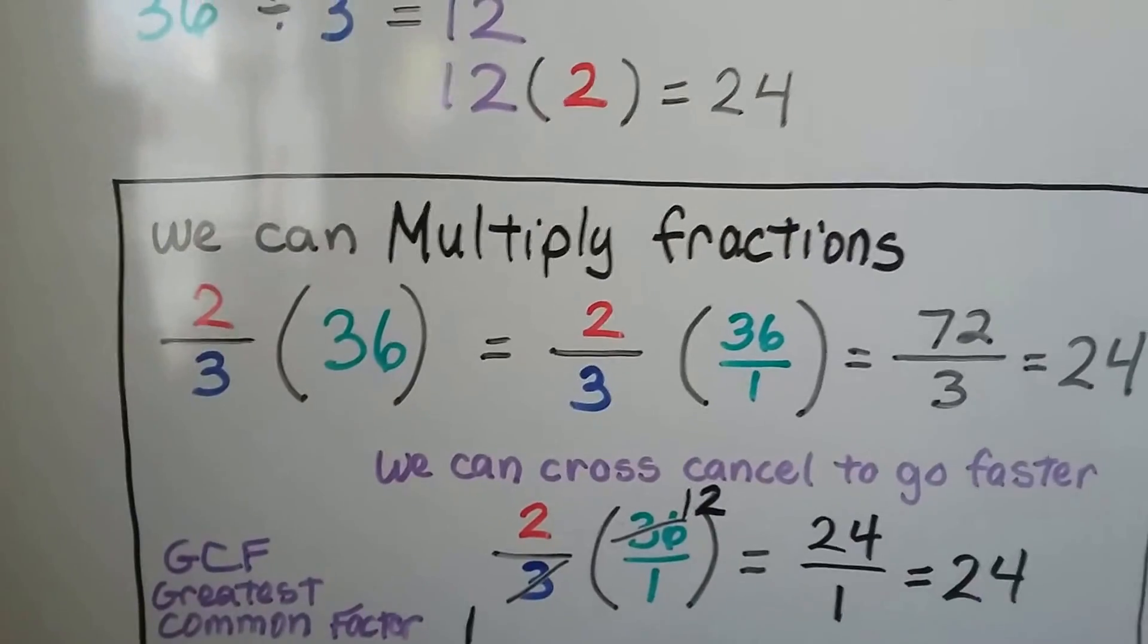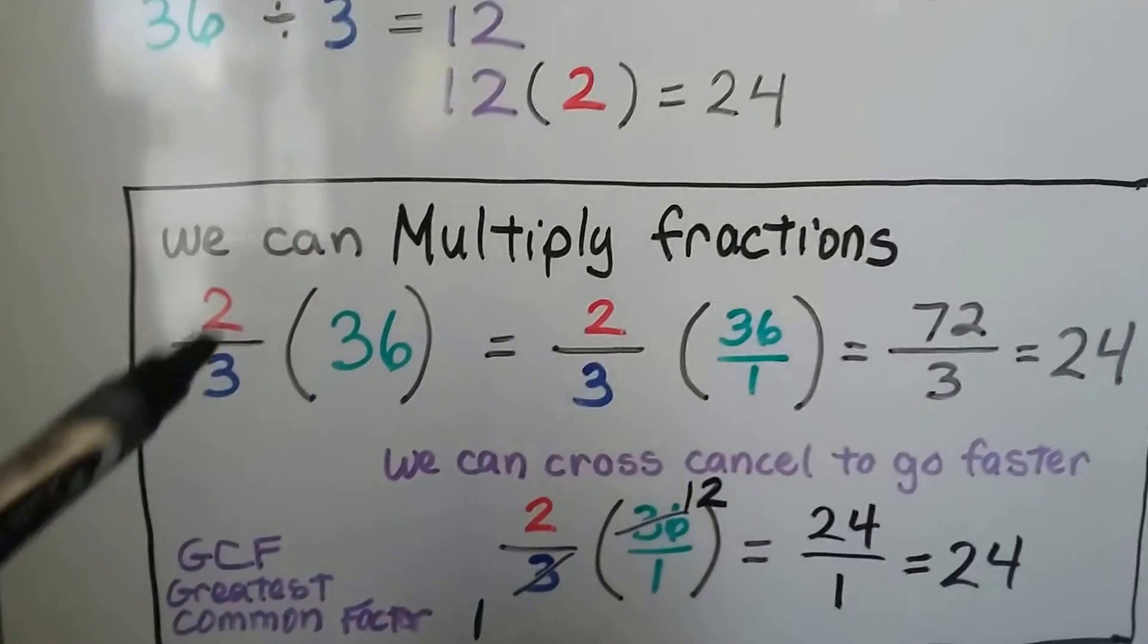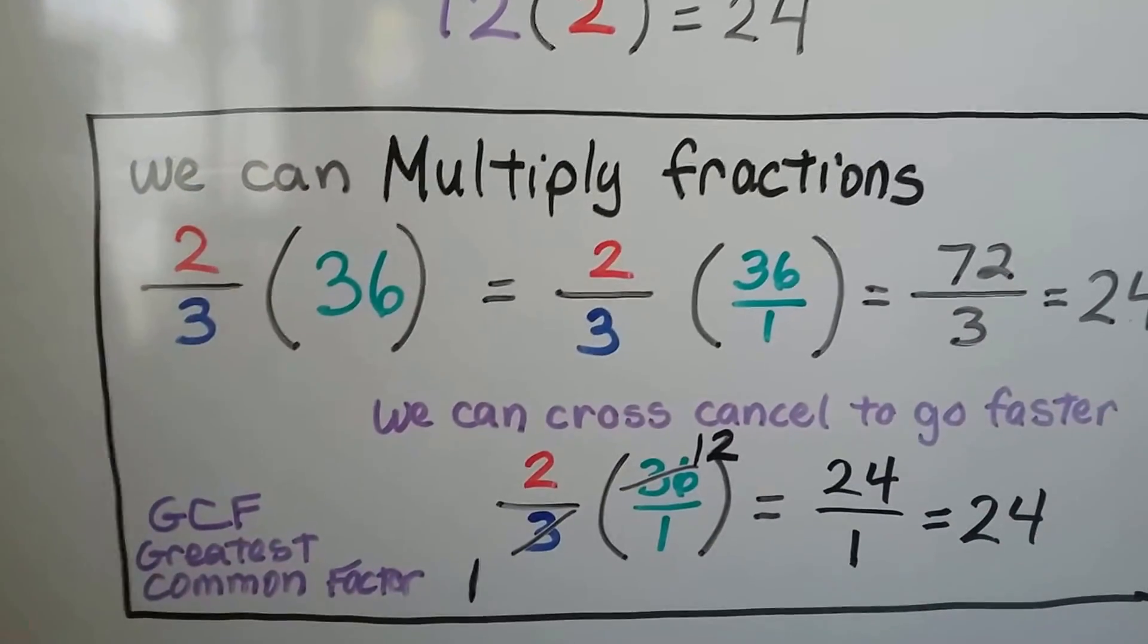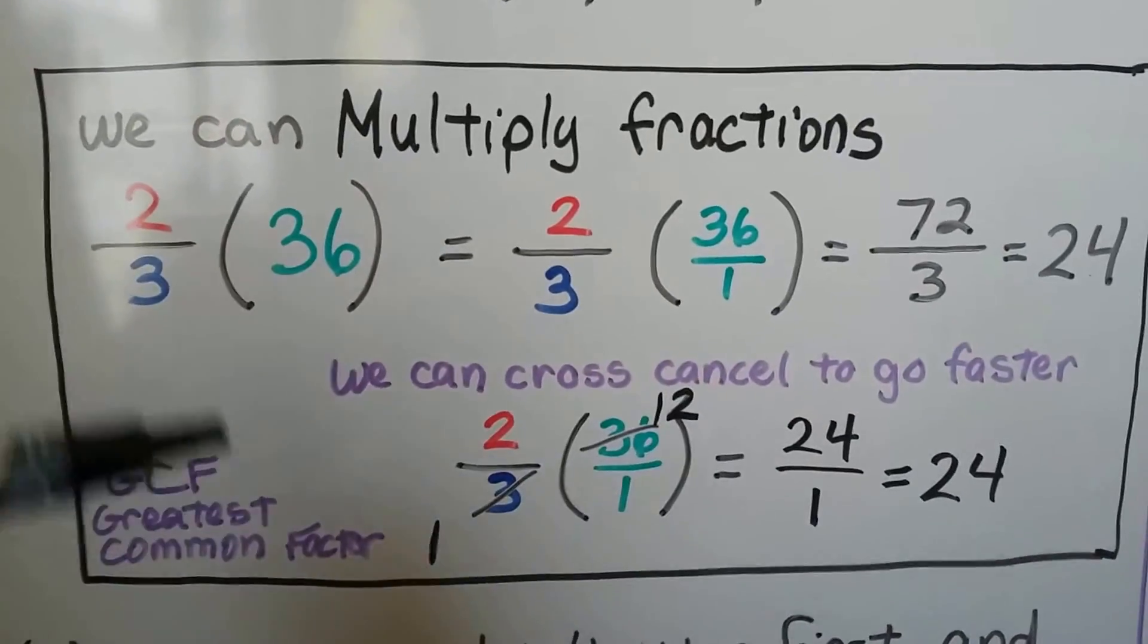We can multiply fractions. Two-thirds of 36, two-thirds times 36. Remember when it's next to parentheses, that means multiply. We can write the 36 as 36 over 1. We can go straight across.